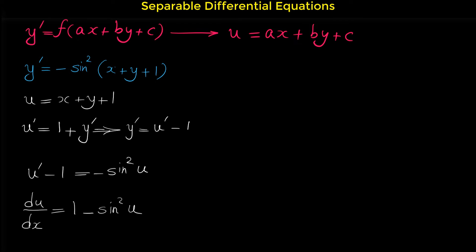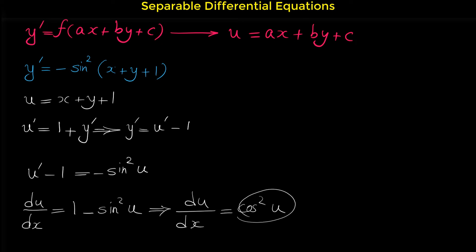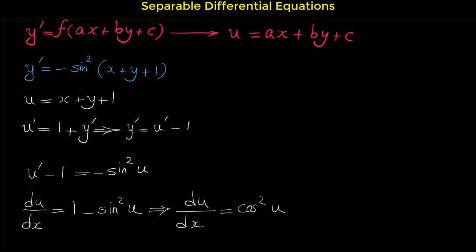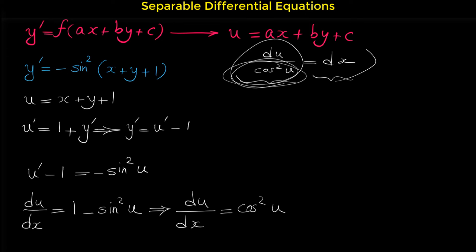Before doing so, note that 1 minus sine squared is cosine squared. From the trigonometric identities, we know that 1 minus sine squared of u is cosine squared of u. So we write the differential equation as du over cosine squared of u equals dx. As you can see, this is a separable differential equation — du and the expression in terms of u is separated from dx.